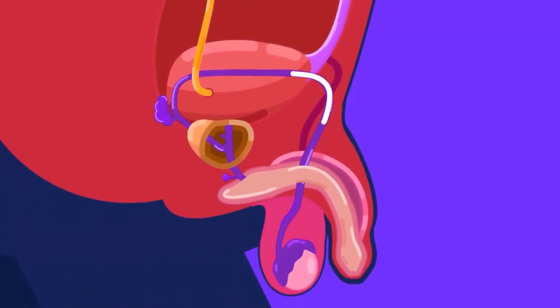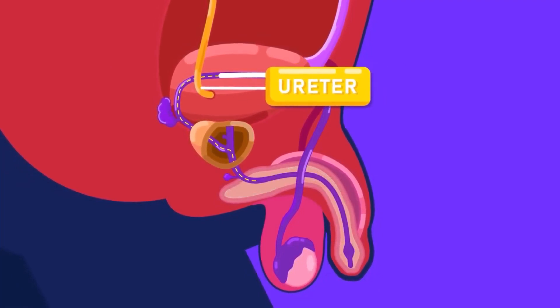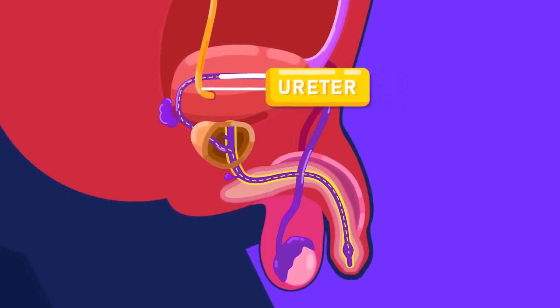The sperm duct from each side passes into the abdominal cavity. It loops over the ureter of that side and finally opens into the urethra.